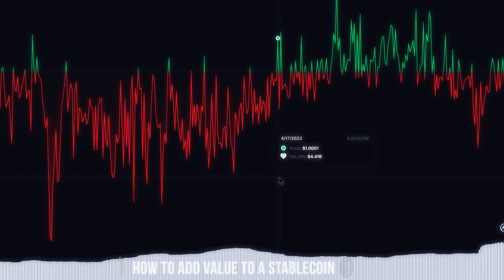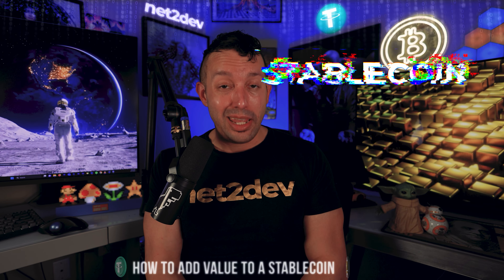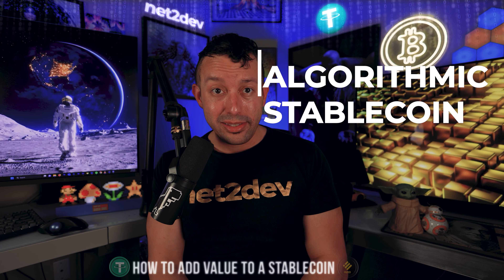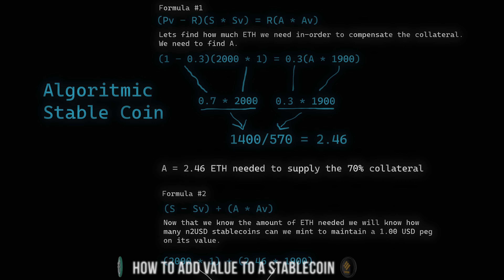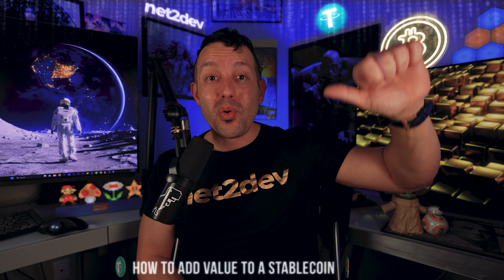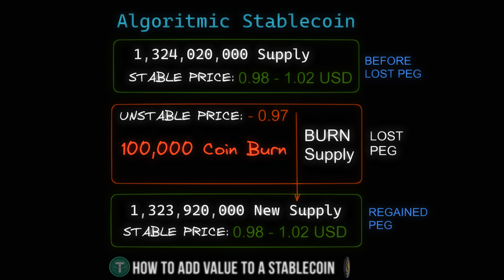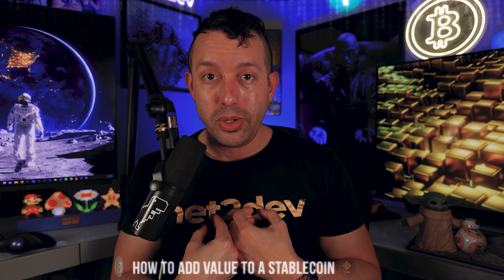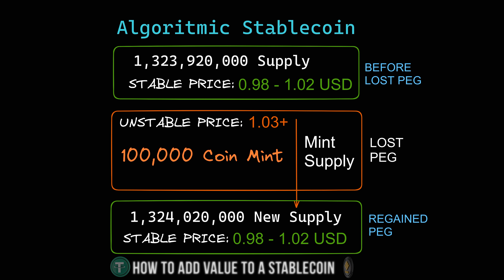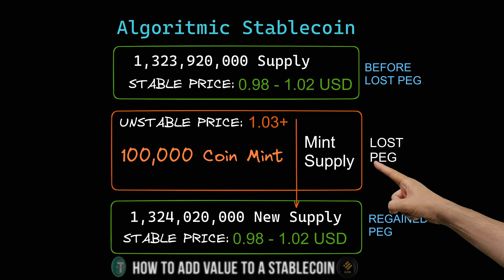This is where we talk about fractionized stablecoins, where you back the token not just with one asset but two or even three. As you add more assets to the collateral, the math to maintain equilibrium becomes harder. This leads us to algorithmic stablecoins — not backed on a one-to-one basis, but by assets whose price is constantly changing. There is a mechanism that allows burning tokens when the price has gone down and there is insufficient collateral to back the supply, lowering the supply to re-peg the token. If the token raises value over the peg, you can mint more tokens to bring it back to balance.